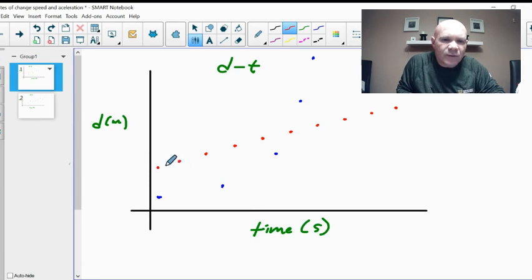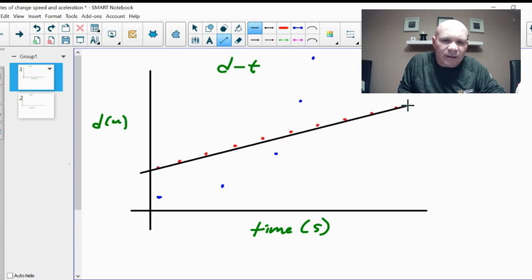And I've got two sets of data. I've got a red set and I've got a blue set. And what you should notice is that one set of this data is kind of in a straight line.